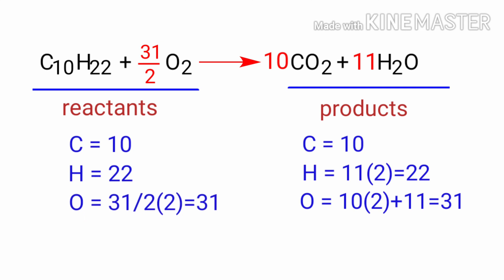In this equation, 31 by 2 is a rational number. We don't use rational numbers for a molecule. So to get whole numbers, we need to multiply the equation by a coefficient of 2.